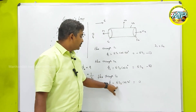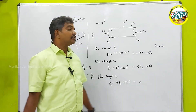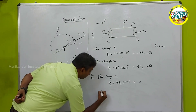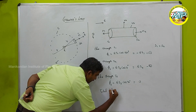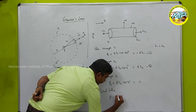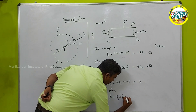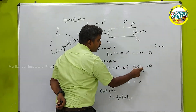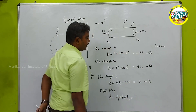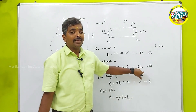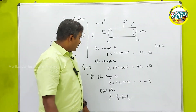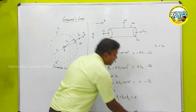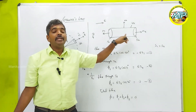For surface S3, the curved surface, the electric field is perpendicular to the normal, so cos90° = 0, and the flux through S3 is zero. The total flux is Φ = Φ₁ + Φ₂ + Φ₃. Substituting and using S1 = S2, the net flux through this Gaussian surface is zero.